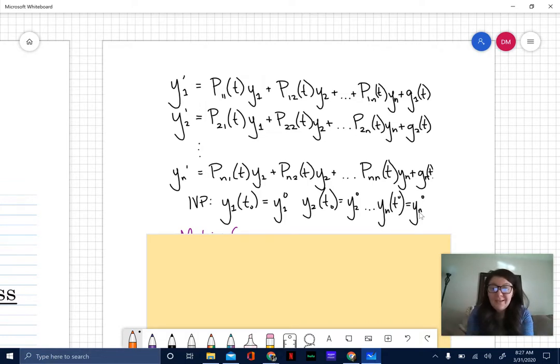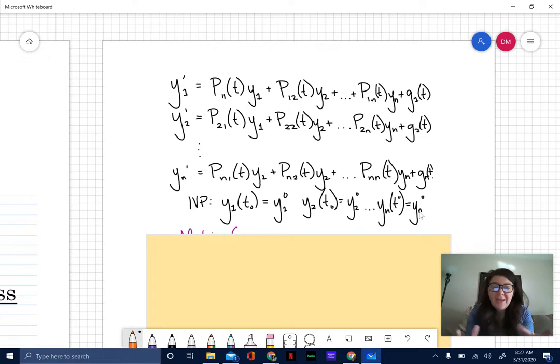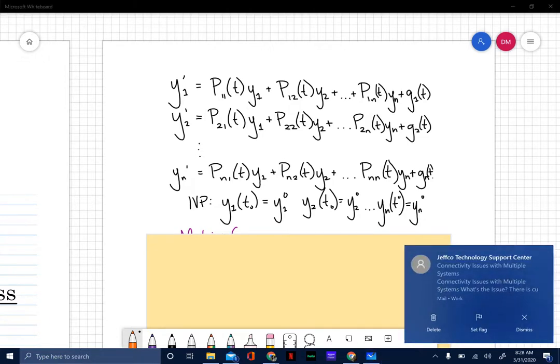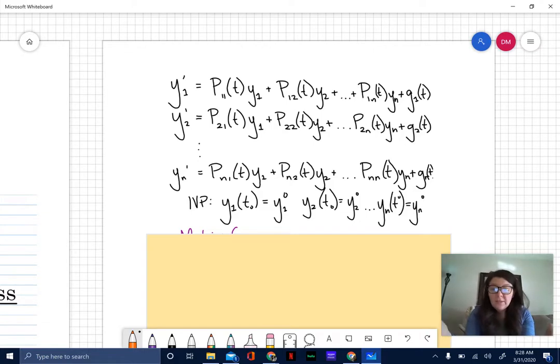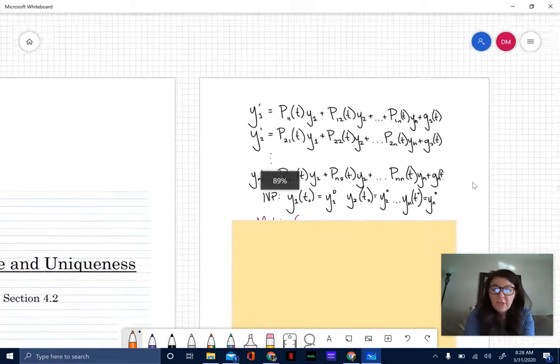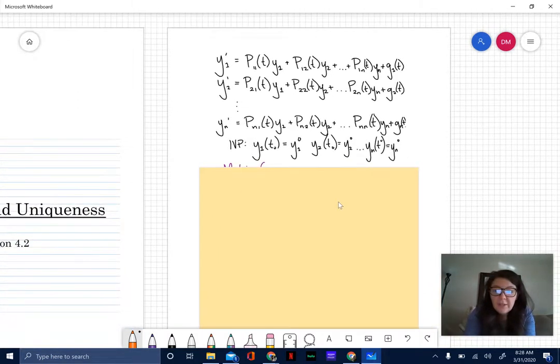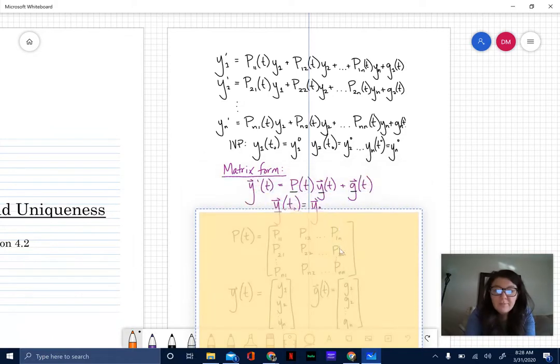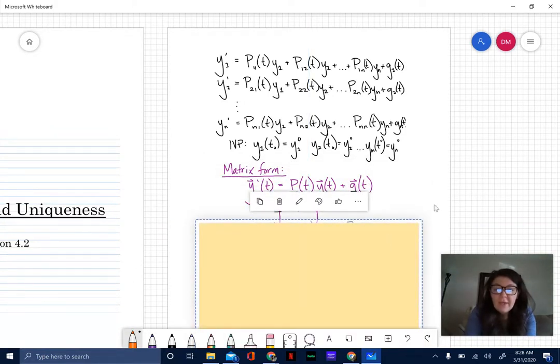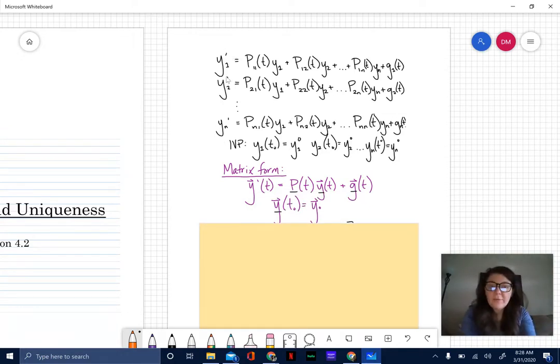We are going to define this as a matrix equation. This is going to be super important that you can get this rewritten in the correct form in this section. In matrix form, if I take all of my first order derivatives - y primes - and write this as a vector value function, these are all vector value functions.